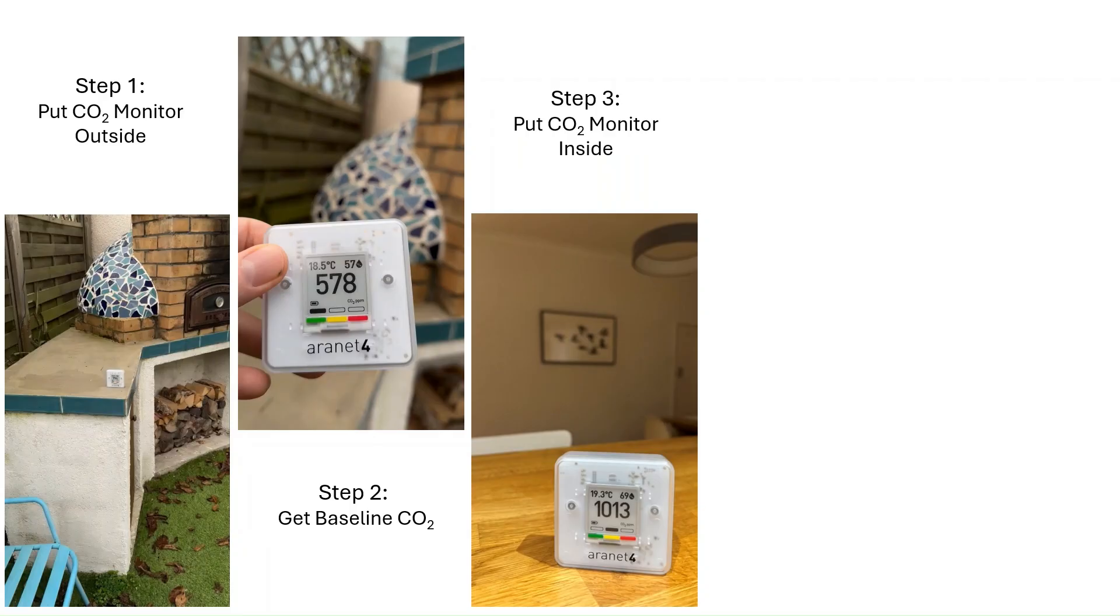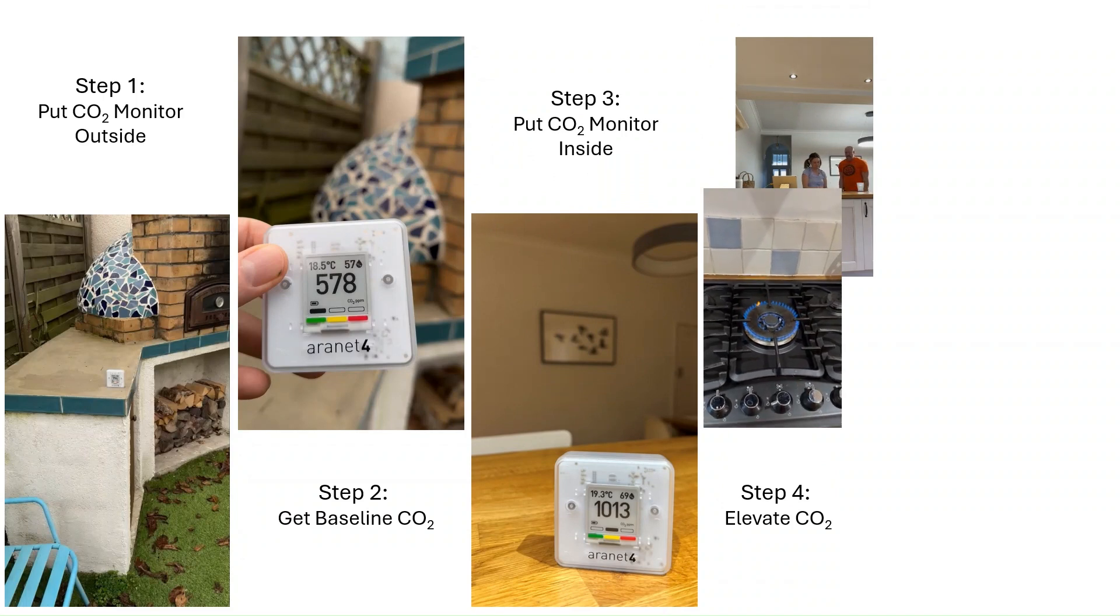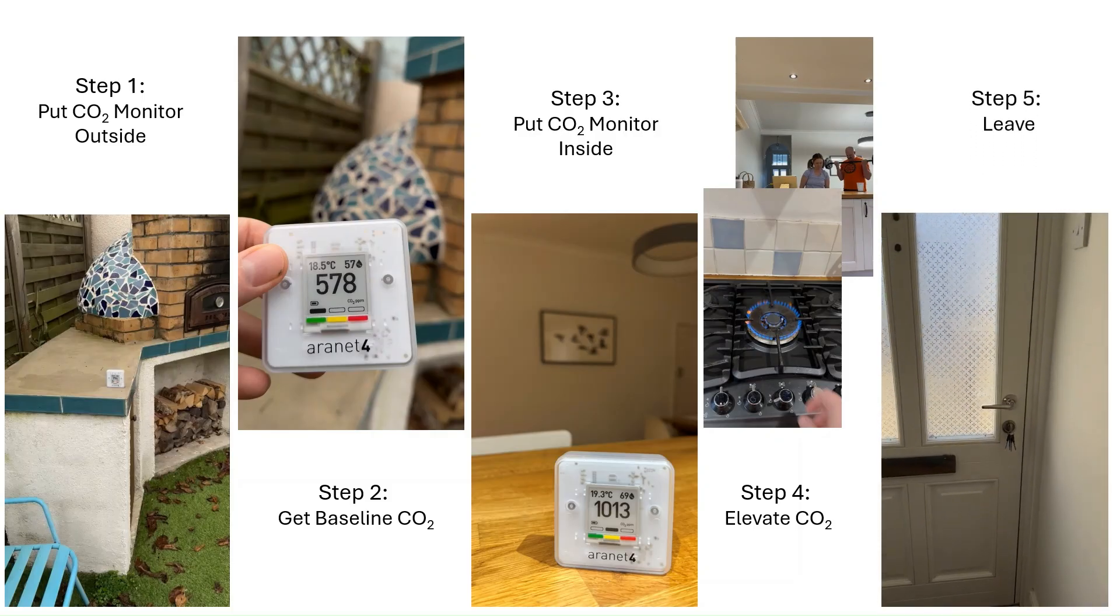Next, simply put the CO2 monitor in the room that you're interested in. Then, you need to increase the CO2 concentration. You can do this any way you like, from exercising to breathing to turning on the boiler. And finally, leave the room.